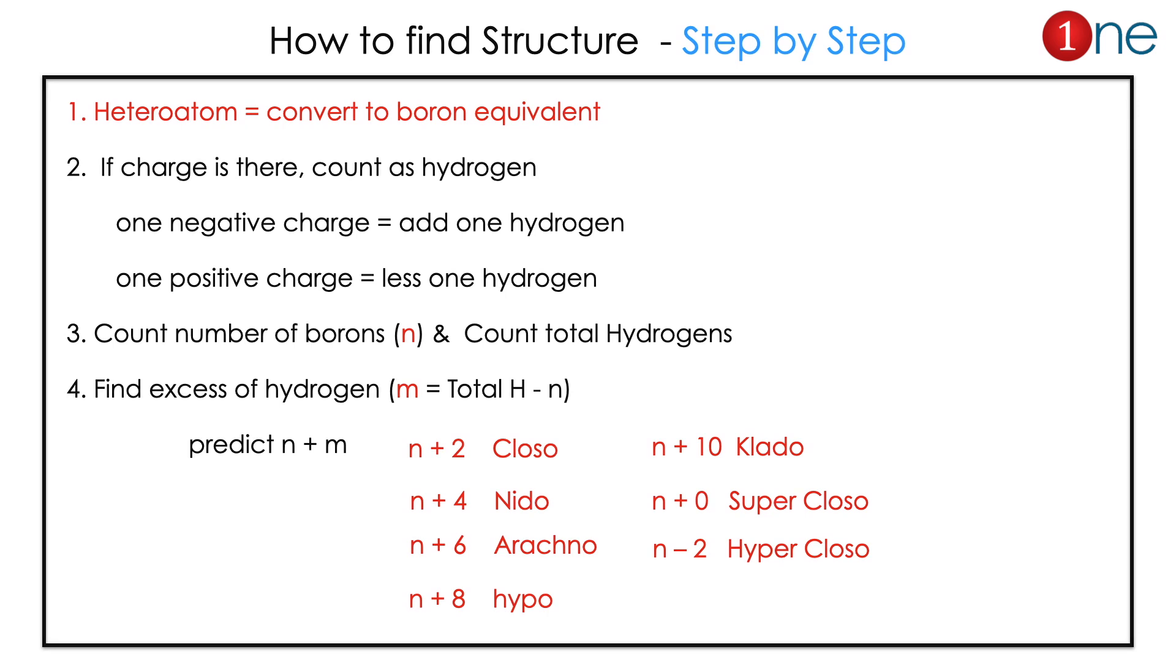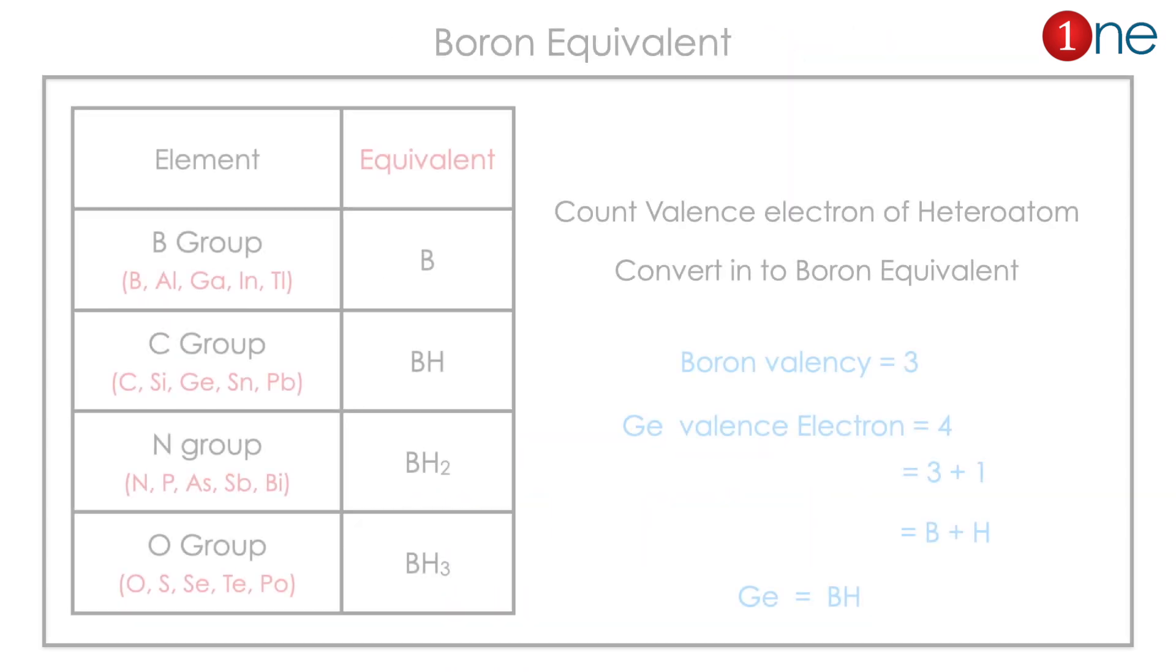Then you have to count total boron which is n, then total hydrogen. Then find the excess of hydrogen which is m, total hydrogen minus n. Once you find n plus m you can find the structure: n+2 means closo, n+4 means nido, and so on and so forth.